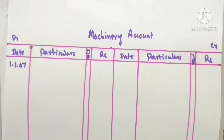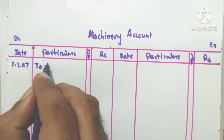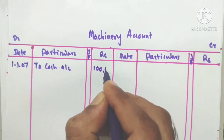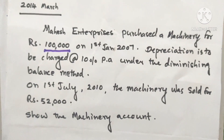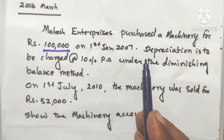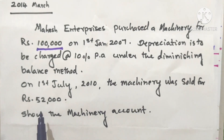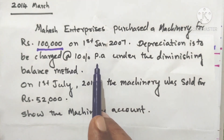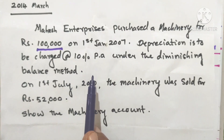Journal entry: machinery account debtor to cash account. To cash account — rupees 1,00,000. So machinery account is opened with an initial debit entry of rupees 1,00,000.